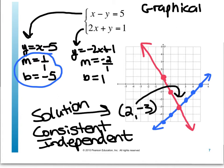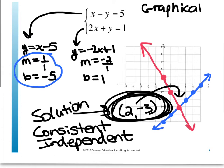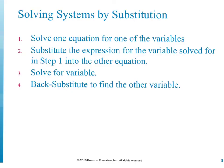This system is consistent because it has one solution, and the equations are independent. The graphical method works best when solutions are integers. When solutions are fractional or decimal, graphing is harder and less reliable. The next method is the substitution method: solve one equation for one variable, substitute that expression into the other equation, solve for the remaining variable, then back-substitute to find the other.